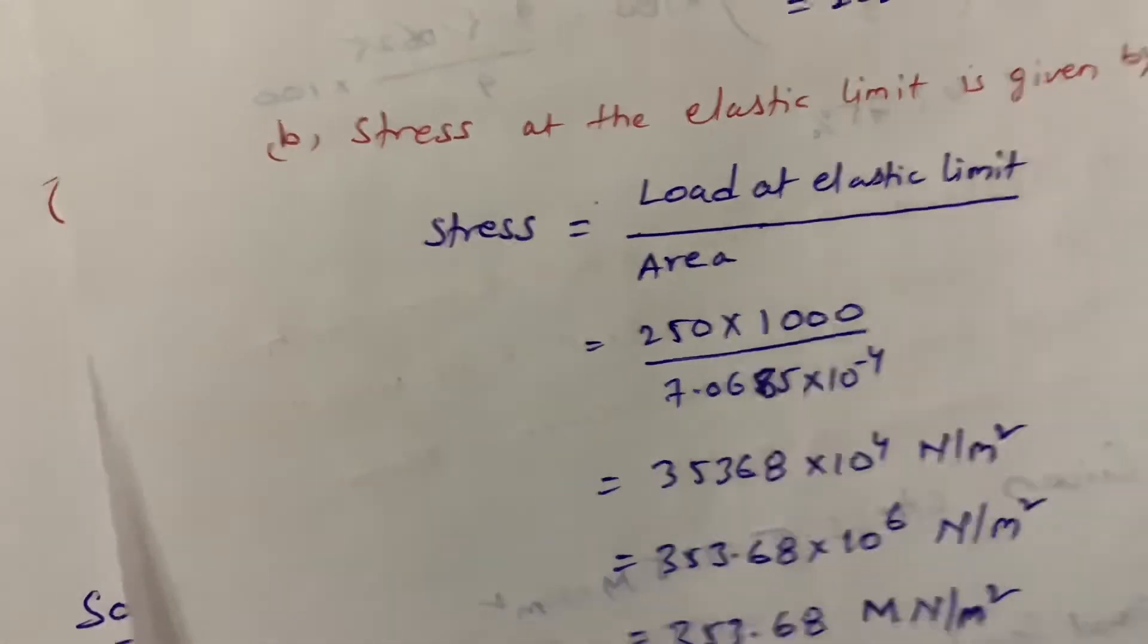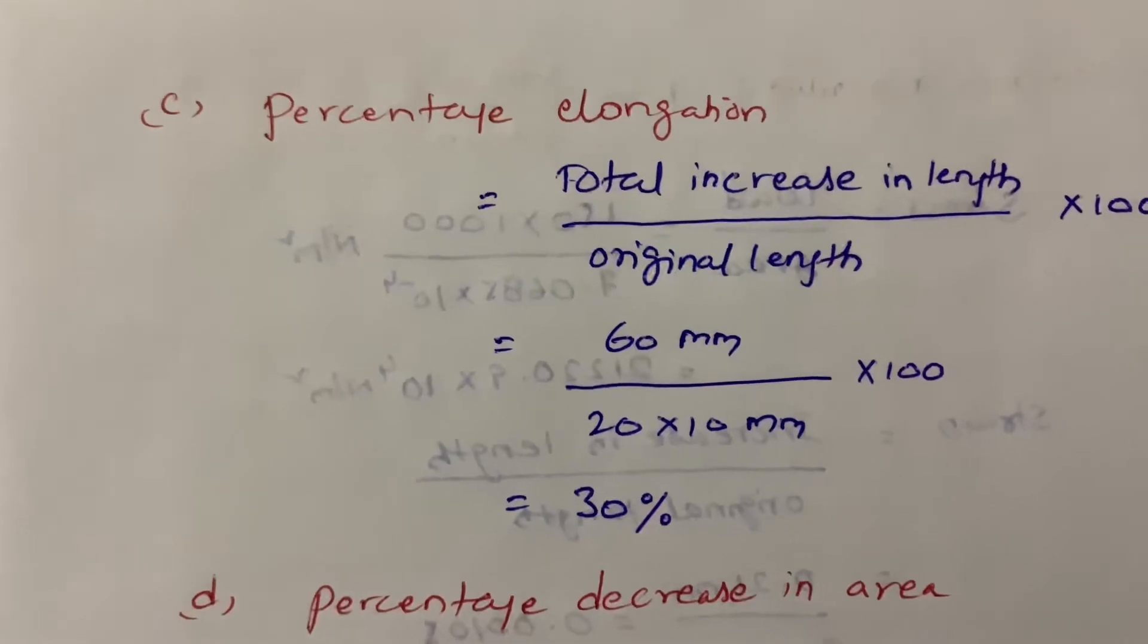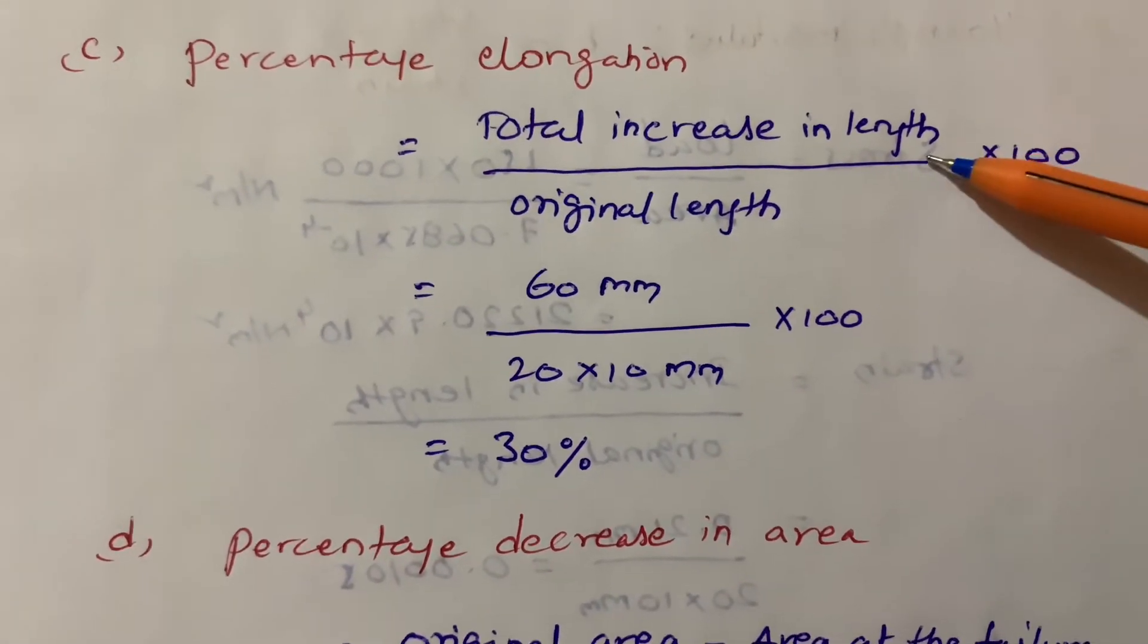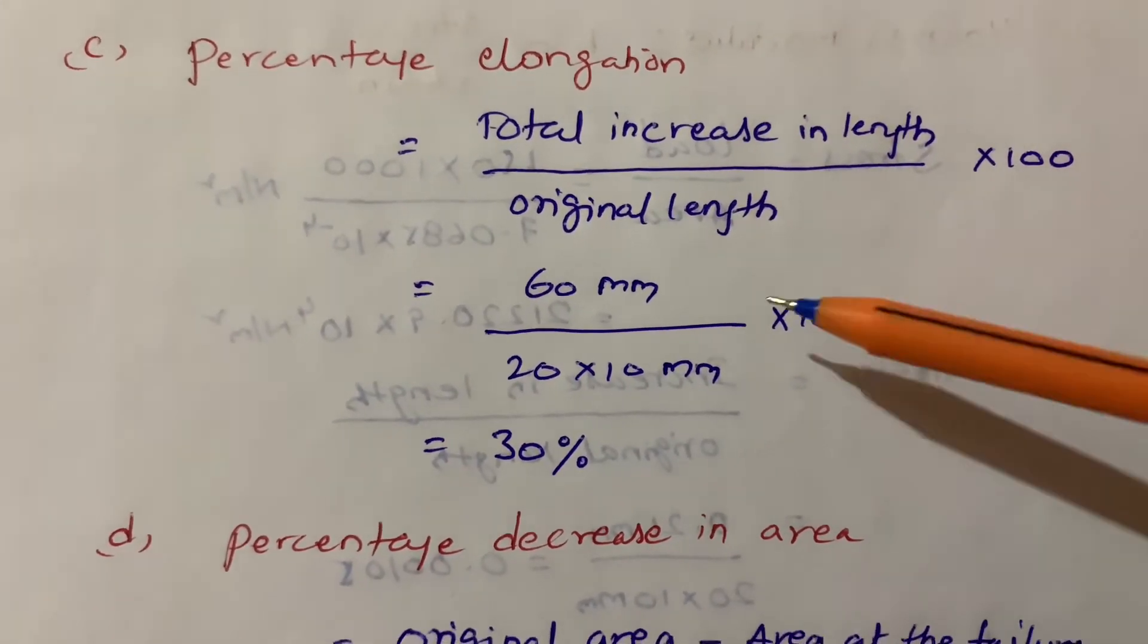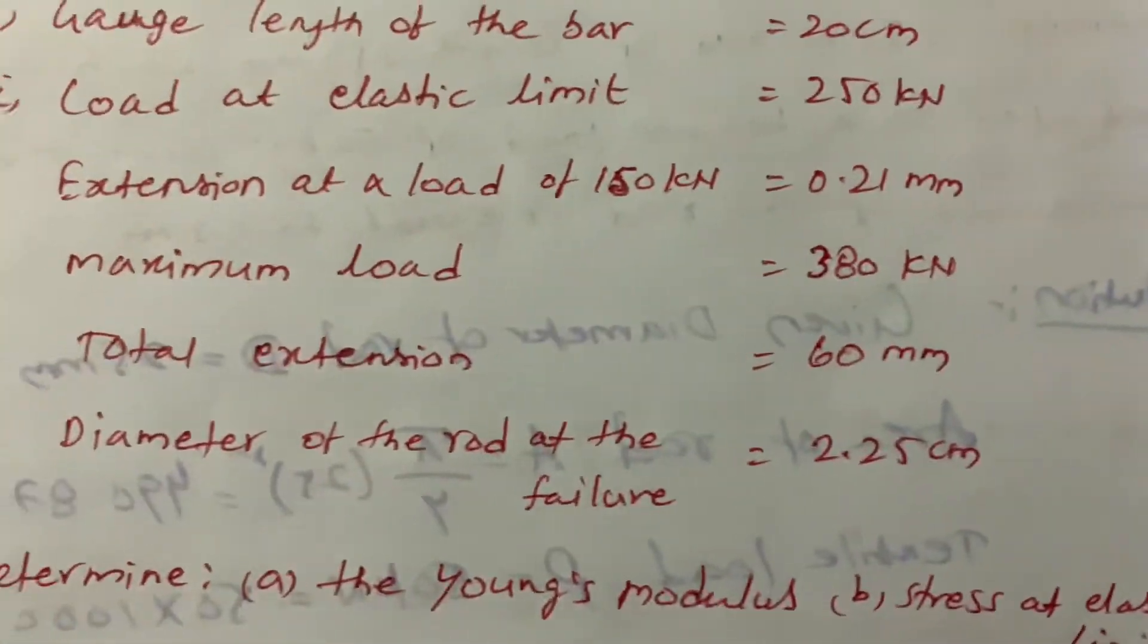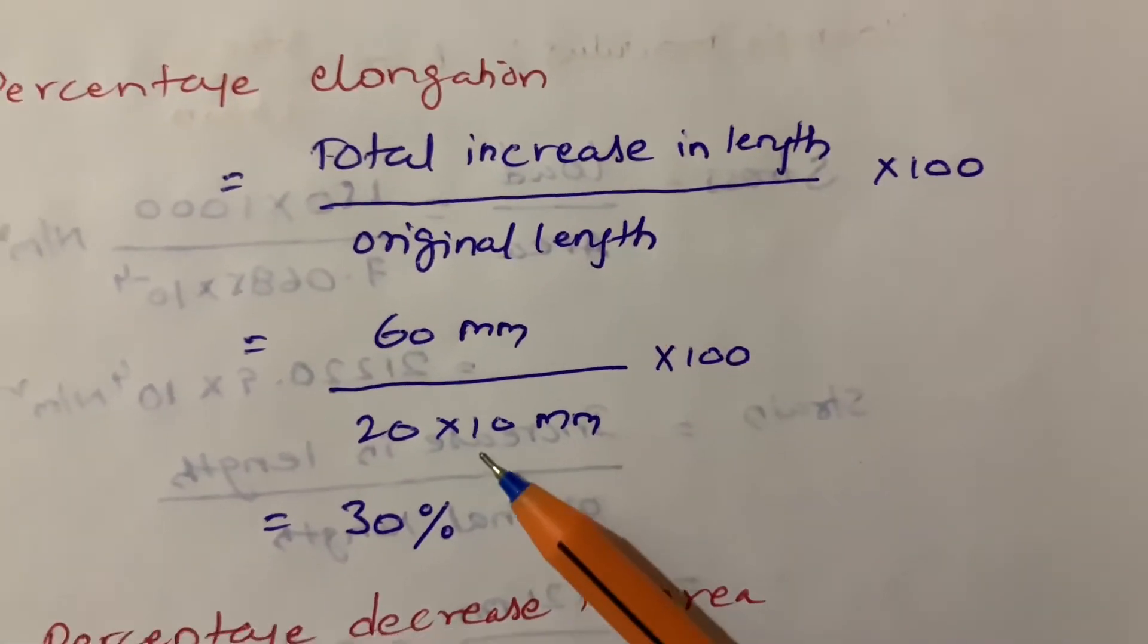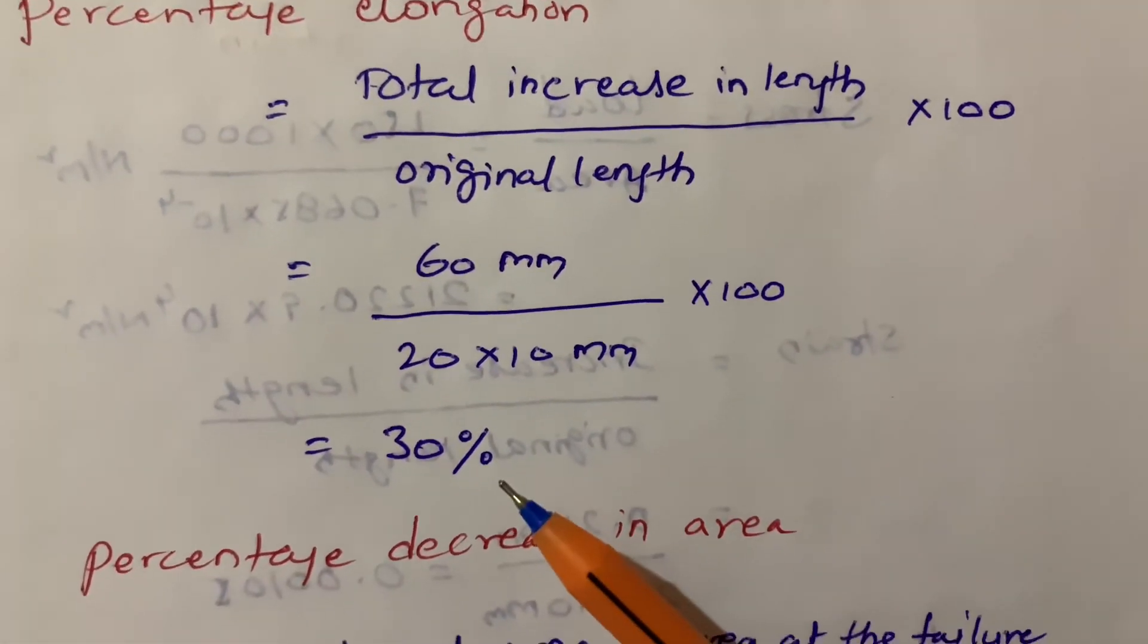Third one is percentage elongation. Percentage elongation is total increase in length by original length times 100. So 60 mm total extension divided by original length 200 mm times 100. I got 30 percent.